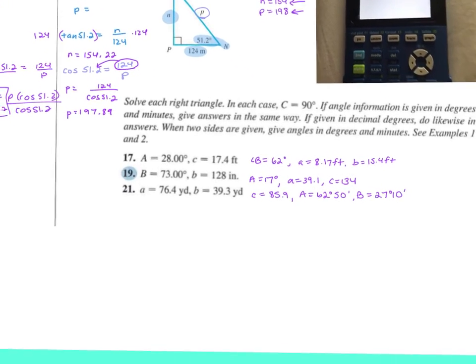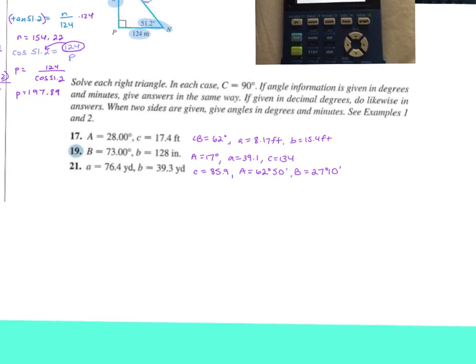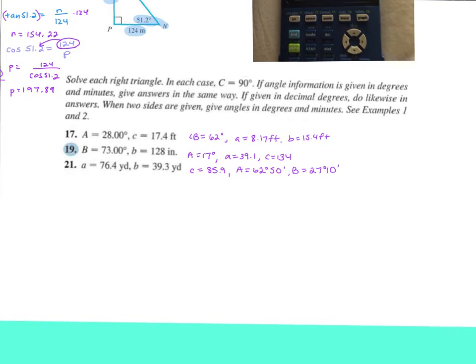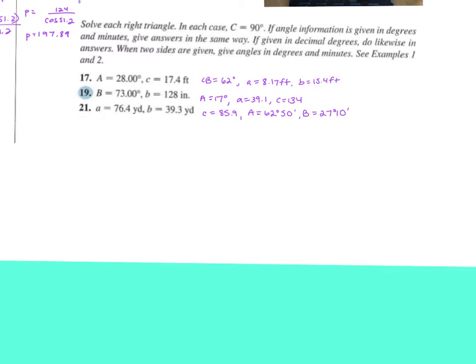Then 17, 19, and 21 in the directions they solve each triangle. In each case, C is 90 degrees. If the angle information is given in degrees and minutes, make sure that your answers are the same way. If given in decimal degrees, do likewise in answers. When two sides are given, give the angles in degrees and minutes. I'm going to start with this first one.